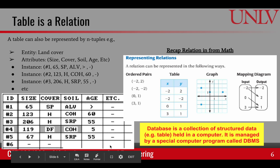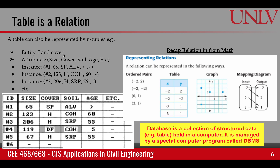This table can be represented as ordered pairs where the entity is land cover and attributes are size, cover, soil, age, and so on. An instance would be the corresponding values of these attributes put together in an n-tuple. These two representations — as n-tuples and as a table — are equivalent representations.